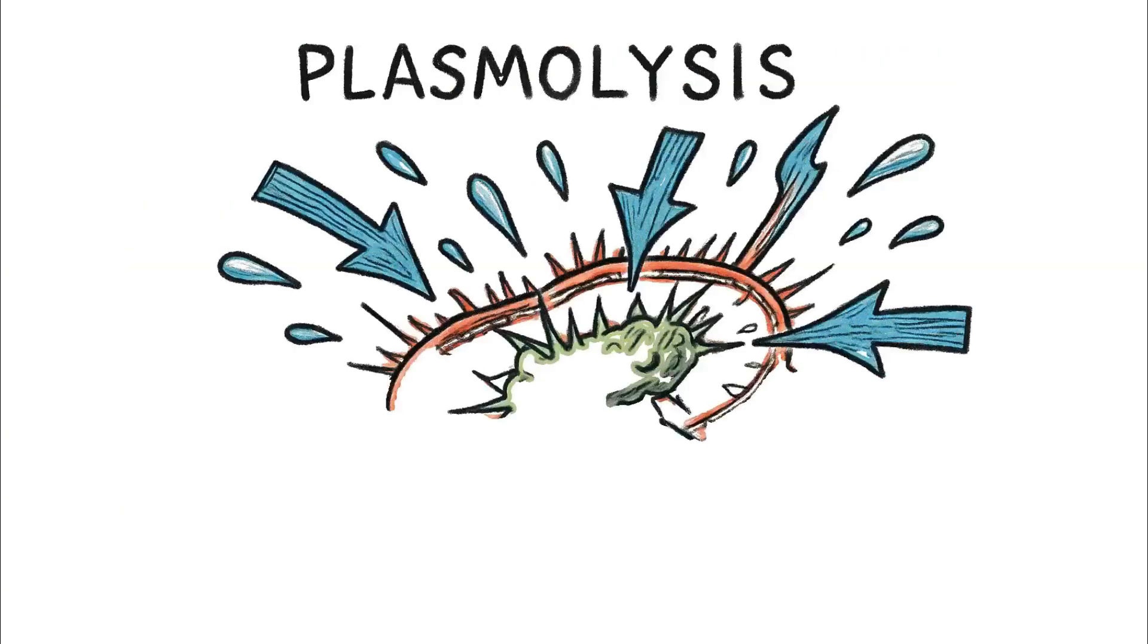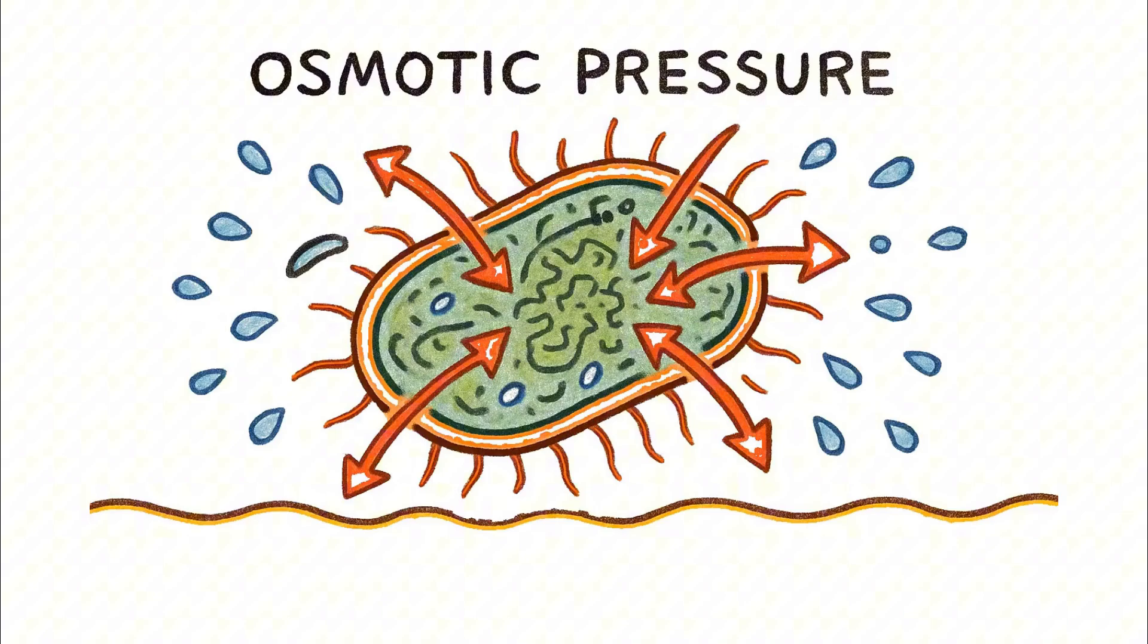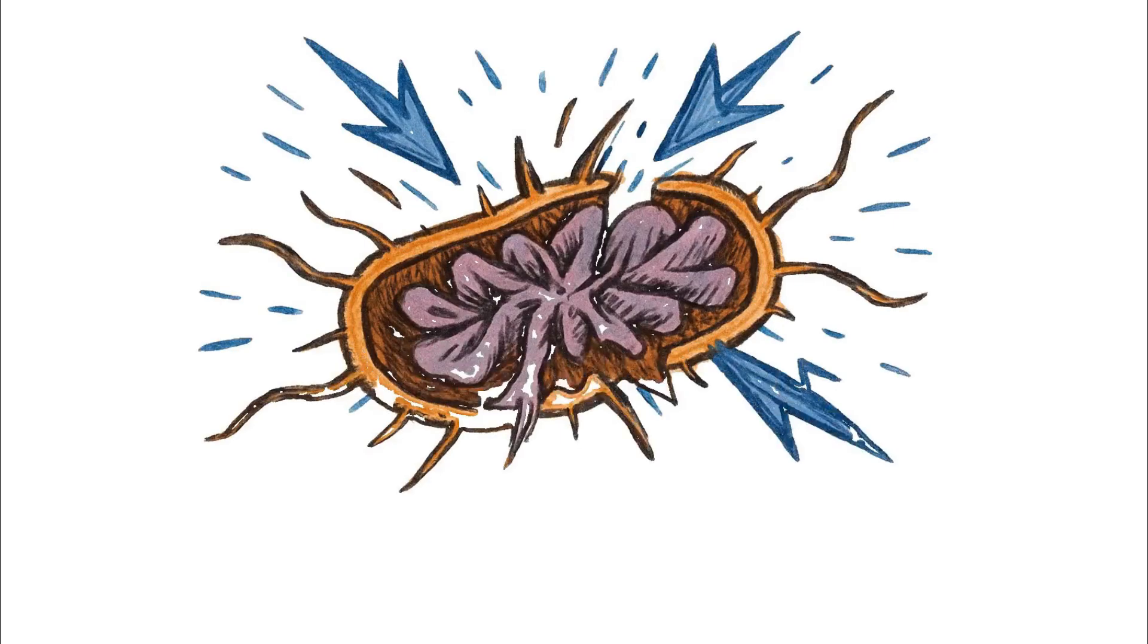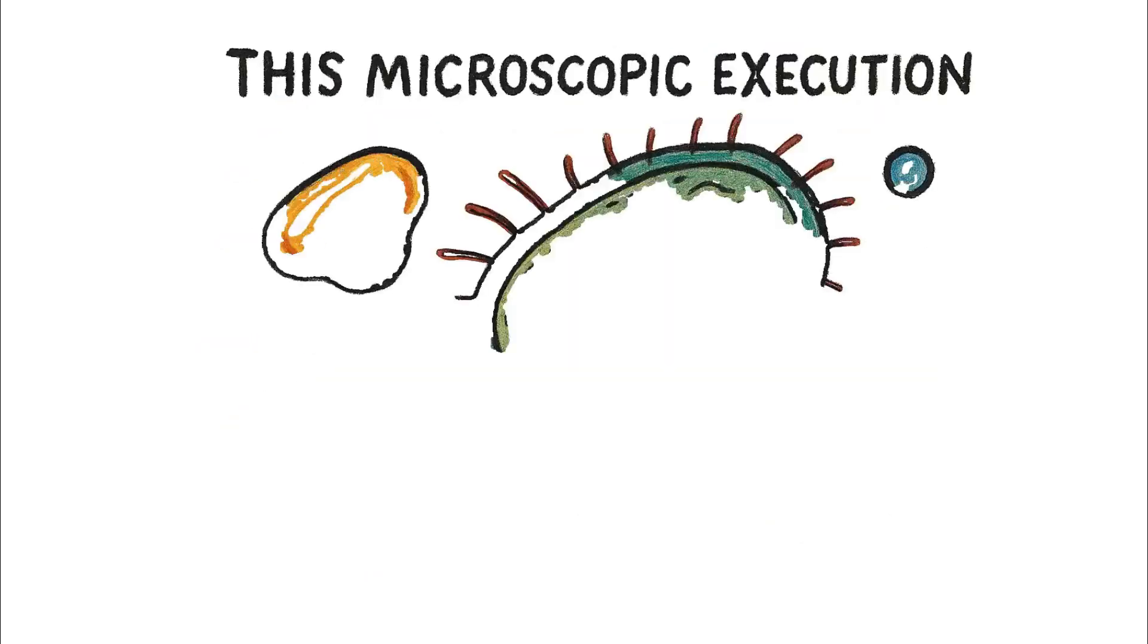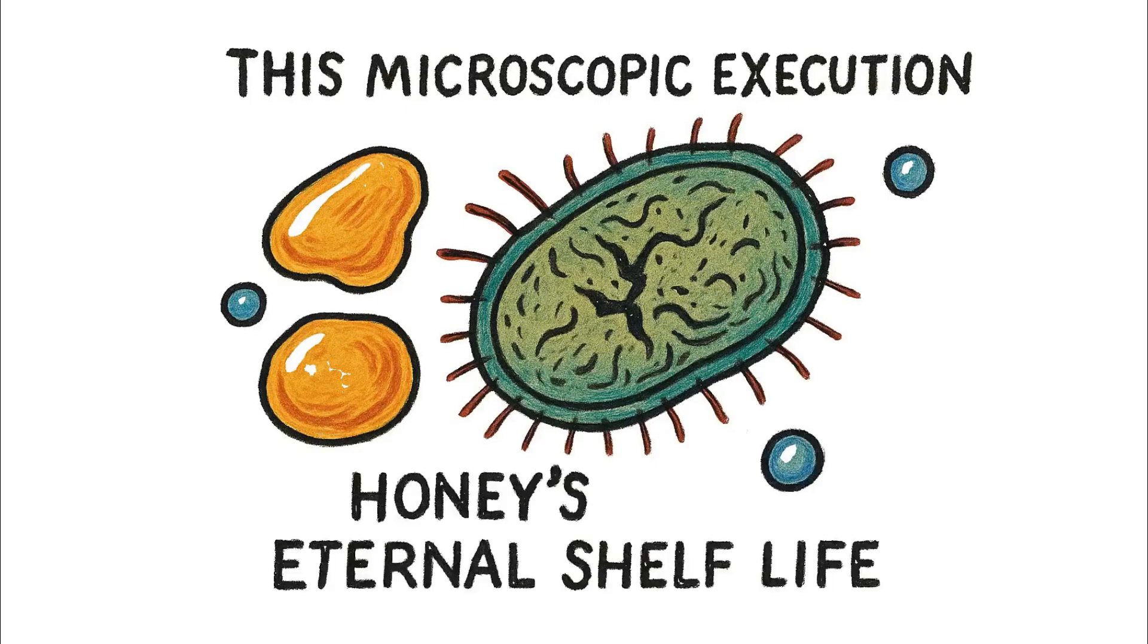Instantly, a violent process called plasmolysis begins. The extreme osmotic pressure of the honey starts ripping the water molecules right through the bacterium cell wall. Its internal structure collapses, its life force is sucked away, and the cell implodes from catastrophic dehydration. This microscopic execution is happening constantly, and it is the secret to honey's eternal shelf life.